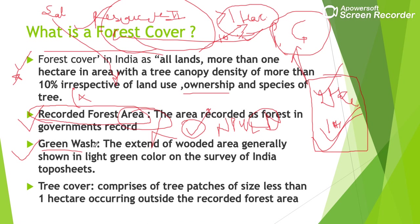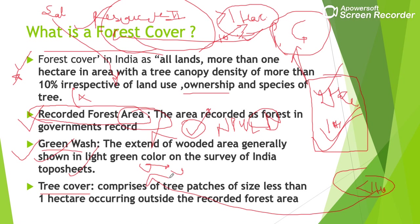The third definition is Green Wash — when we look at maps, we see dark green and light green color variations. The light green areas in Survey of India topo sheets that are adjacent to forest areas are called green wash. Tree cover means any patch whose land area is less than one hectare — that comes under tree cover.